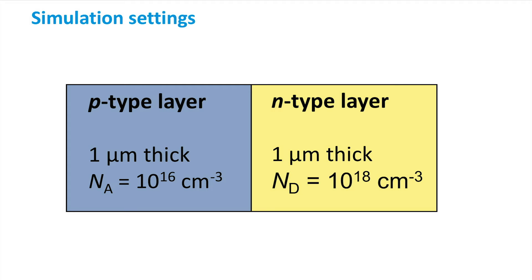In this simulation, a P-type crystalline silicon layer of one micrometer with an acceptor concentration Na of 10 to the 16th per cubic centimeter was used. A one-micrometer-thick N-type layer of crystalline silicon with a donor concentration Nd of 10 to the 18th per cubic centimeter was used to form a PN junction. With these numbers, we can produce a band diagram for a PN junction and see how those bands change when we apply a forward bias.